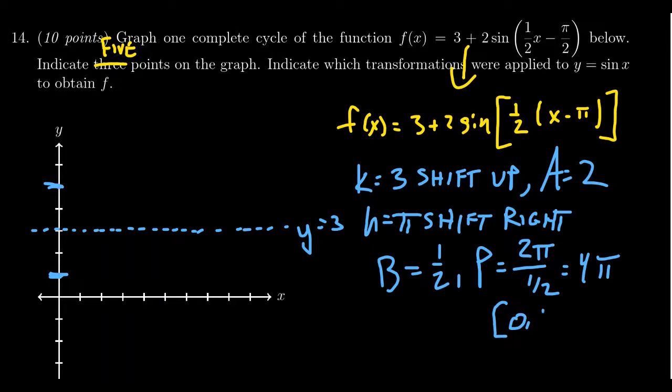But JK, right? Because of the shift to the right by π, I'm actually going to graph this thing from π to 5π.